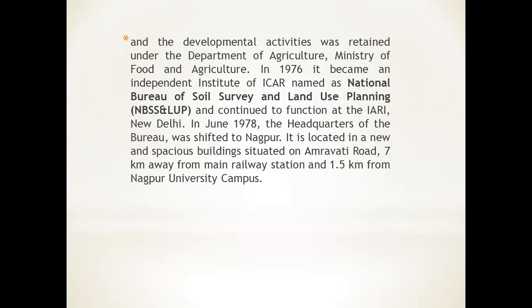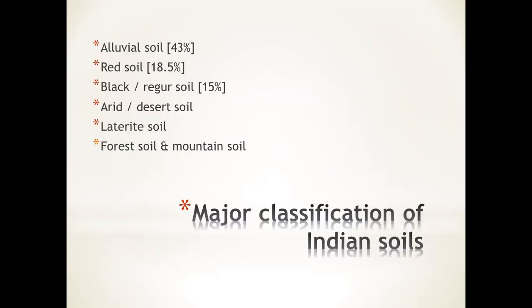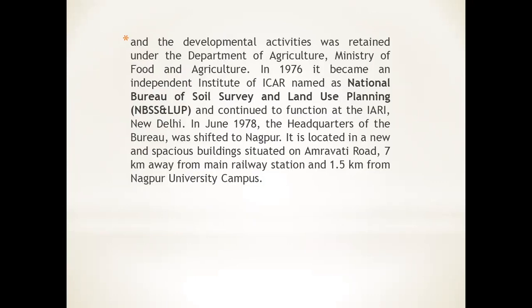In 1976, it became an independent institute of ICAR named the National Bureau of Soil Survey and Land Use Planning (NBSS & LUP), and continued to function at IARI, New Delhi. In June 1978, the headquarters of the bureau was shifted to Nagpur, located on Amravati Road, 7 kilometers from the main railway station and 1.5 kilometers from Nagpur University campus. Based on these soil surveys, soil has been categorized into alluvial, red, black, arid or desert, laterite, and forest and mountain soil.